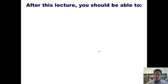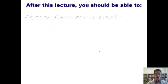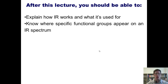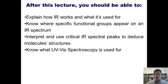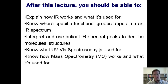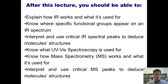After this lecture, you should be able to do the following: explain how IR works and what it's for; know where specific functional groups appear on an IR spectrum; interpret and use critical IR spectral peaks to deduce molecule structures; know what UV-Vis spectroscopy is used for; know how mass spec works and what it's used for; and be able to interpret and use critical MS peaks to deduce molecule structures.